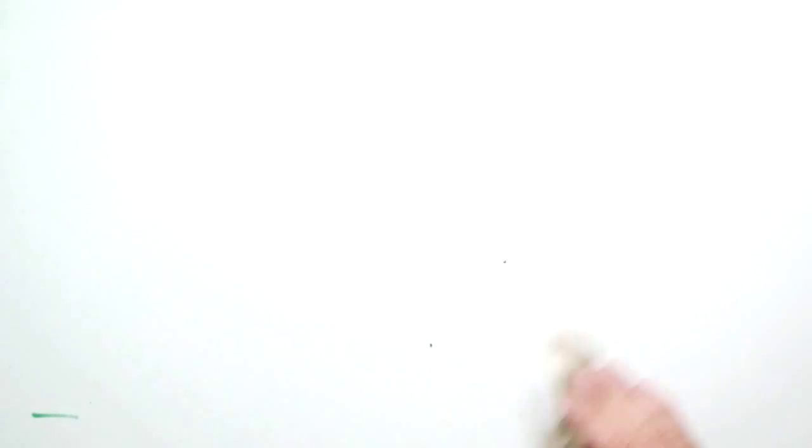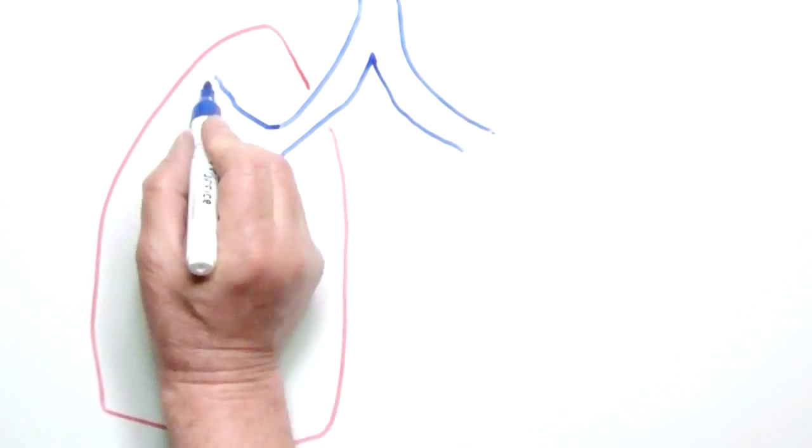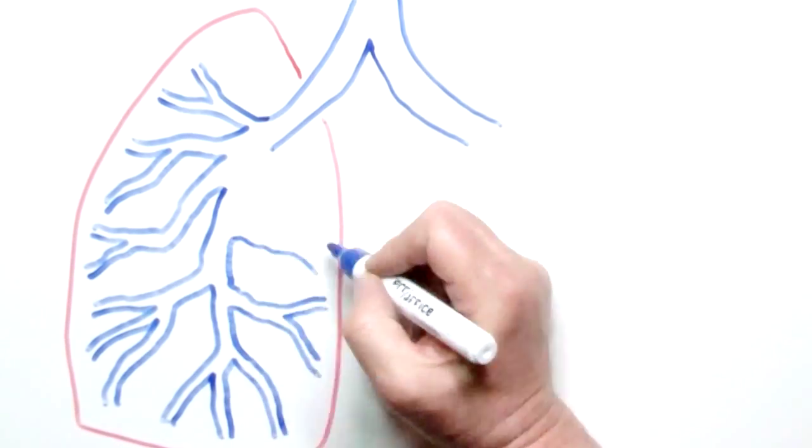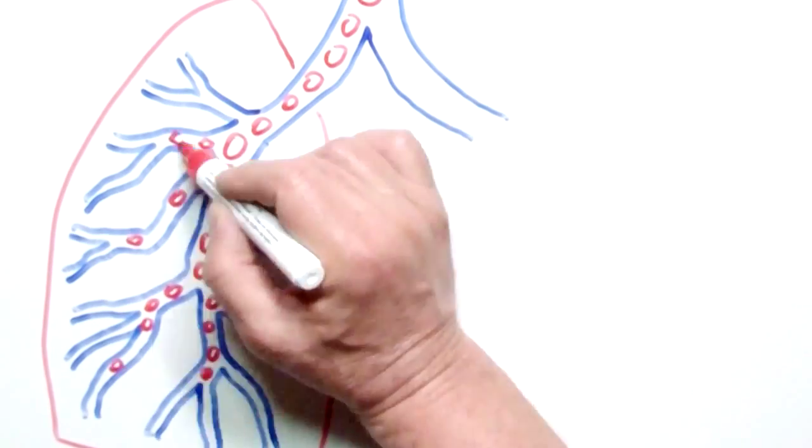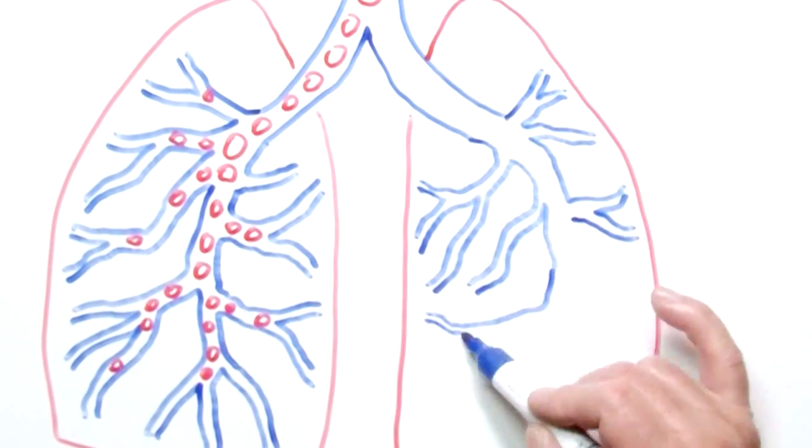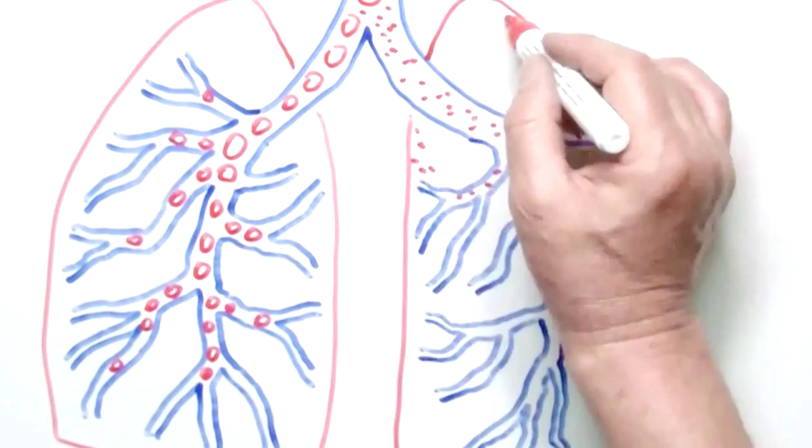And this is where the matter becomes critical for us. The smaller the particles are, the more dangerous they are for people. The minuscule particles reach much deeper into the lungs than the larger ones, and they stay there longer.